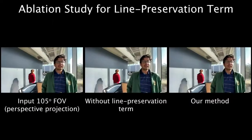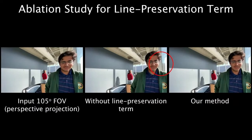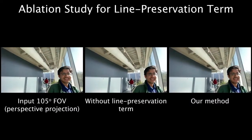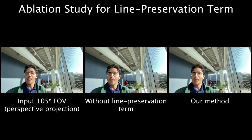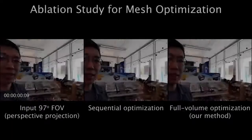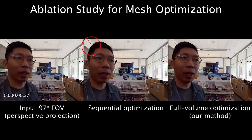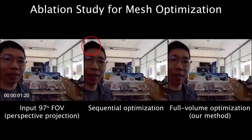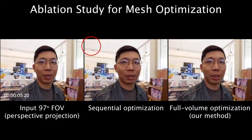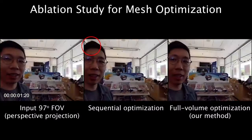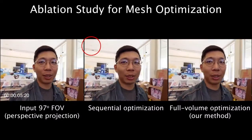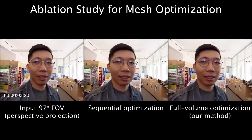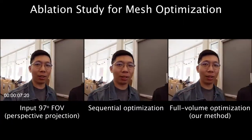The line preservation term avoids distorting the straight lines in the background and preserves the scene geometry. We also compare to sequential optimization, which breaks down the full volume optimization into smaller blocks involving only one previous frame. This method achieves shorter processing time, but straight lines near face regions may be distorted.